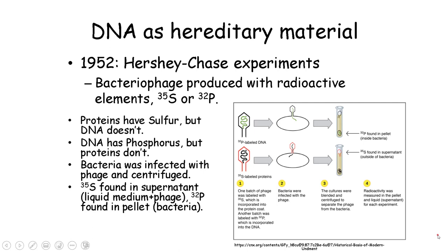They radioactively labeled one batch of bacteriophages with radioactive phosphorus and another batch with radioactive sulfur. After centrifugation, they found that the pellet, which would contain the contents inside the bacteria, had the radioactive phosphorus, and the supernatant, which would be the things outside the bacteria, contained sulfur. Because the bacteria contained the radioactive phosphorus from the phage DNA and not the sulfur from the phage proteins, they concluded that DNA was the genetic material transferred from the phage into the bacteria.